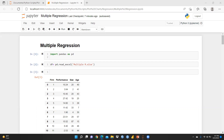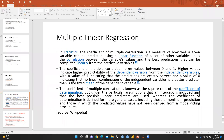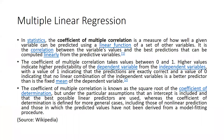Before that, I would like to share with you what are the assumptions of multiple regression and what is actually multiple regression. This piece of work I have taken from Wikipedia. In statistics, the coefficient of multiple correlation is a measure of how well a given variable can be predicted using a linear function of a set of other variables.